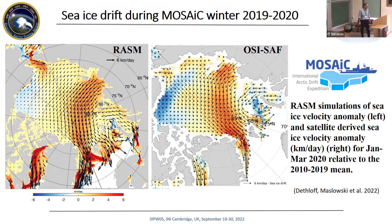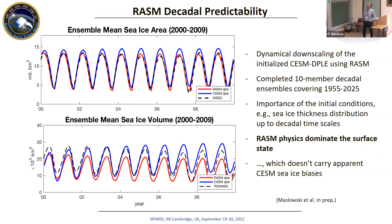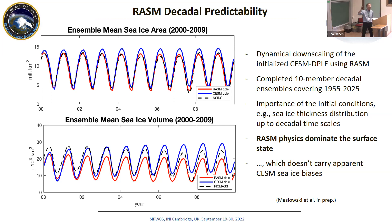As part of the RASM project, we used CESM DPLE (Decadal Prediction Large Ensemble) initialized results to force our downscaling in RASM, running simulations from 1955 to 2025. Showing one ensemble member from 2000 through 2009: the blue is CESM ice area ensemble mean, red is RASM, and the dashed black is the NSIDC mean for that period. We use CESM atmospheric output to drive RASM ensemble members but initialize RASM with RASM initial conditions rather than CESM initial conditions.